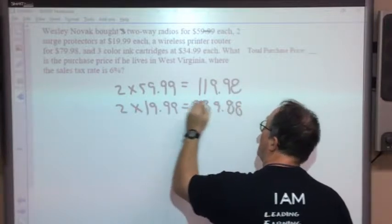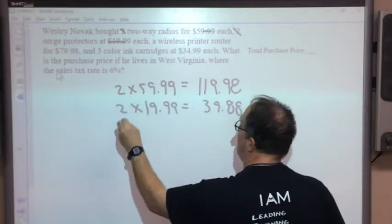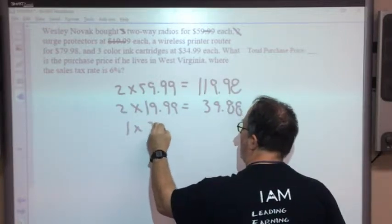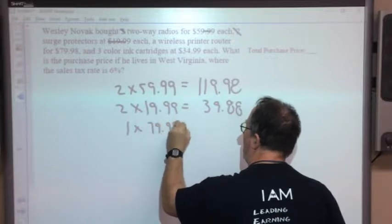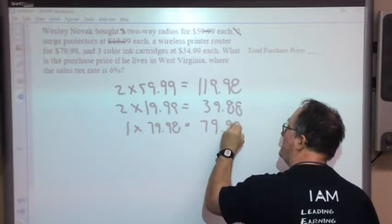Take into account multiple items of the same thing like the two-way radios, the two surge protectors, and the three ink cartridges. You're going to add them all up and multiply times the number. You can break it down like I have here.